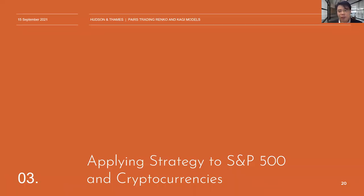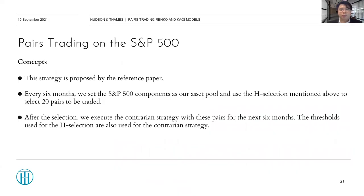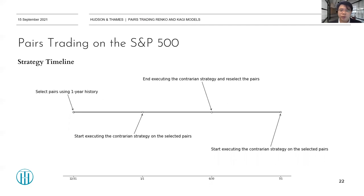Next, let's talk about the backtesting on S&P 500 components and cryptocurrencies. This strategy is proposed by the reference paper. Every six months, we set the S&P 500 components as our asset pool and use the pair selection method to select 20 pairs to trade. After selection, we execute the contrarian strategy with these pairs for the next six months, using the same thresholds from selection. The timeline: we first select pairs using one year of history, execute the contrarian strategy for six months, then repeat the selection process.